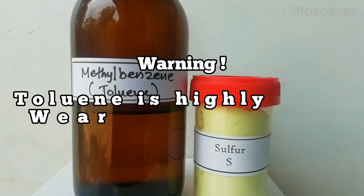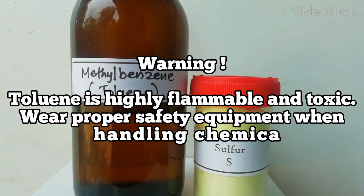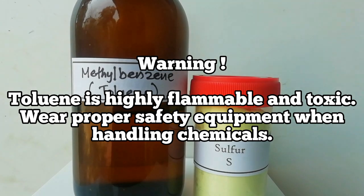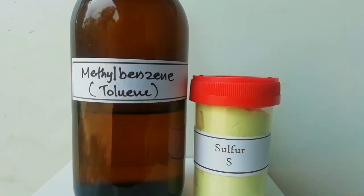Warning: Toluene is highly flammable and toxic. Wear proper safety equipment when handling chemicals. In this video, we are going to make sulfur crystals. For that, we need a solvent to dissolve sulfur, so toluene is used as the solvent.